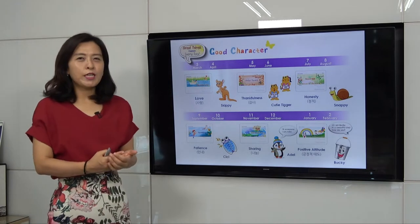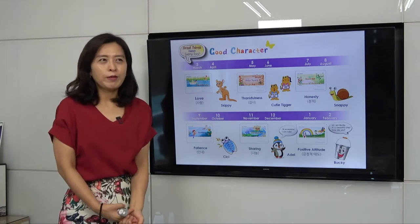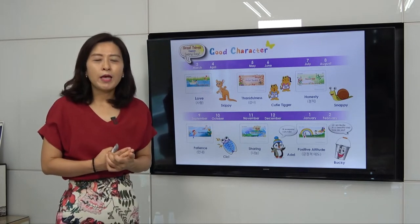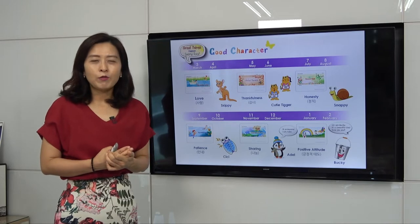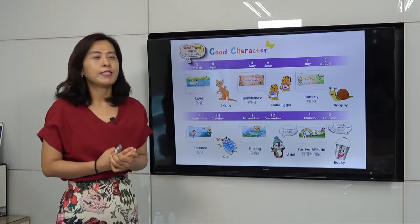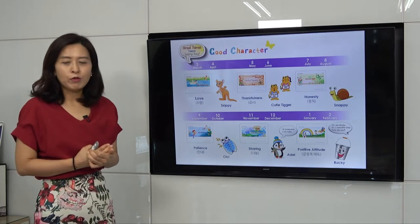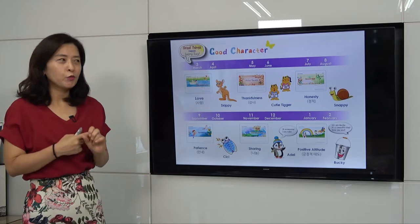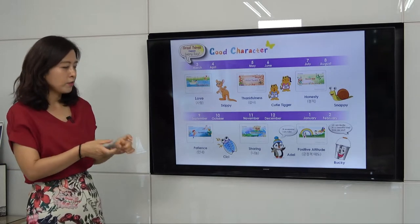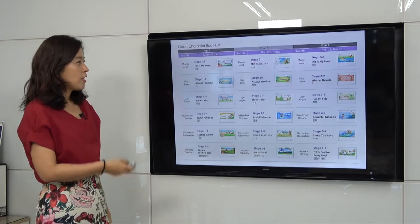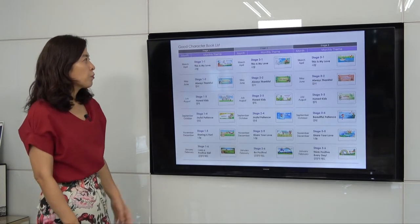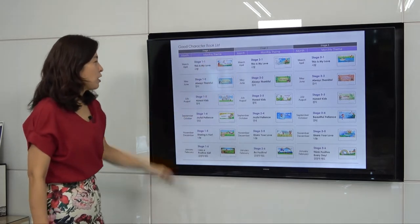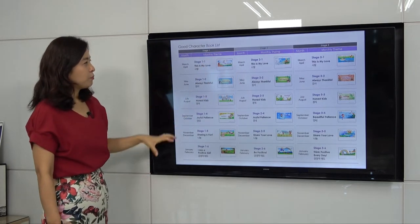Teachers can use our program once a week. Every lesson takes 40 minutes. They can use our program for two months because we have eight different lessons for each theme. We have stage one, two, and three, so we have six different books in total.